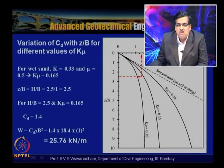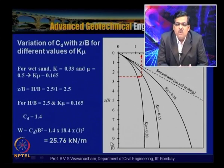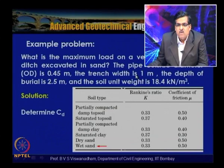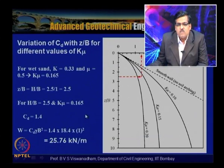With Cd = 1.4, the load is: W = Cd × γ × b² = 1.4 × 18.4 × 1² = 25.76 kN/m. For comparison, the weight of the soil prism above the pipe would be approximately γ × h = 20 × 2.5 = 50 kN/m², illustrating the arching reduction in load for the ditch conduit case.